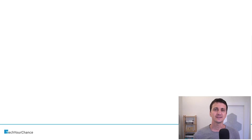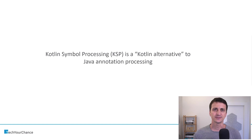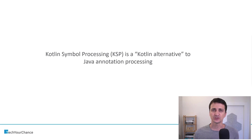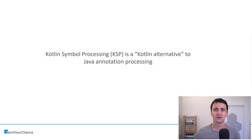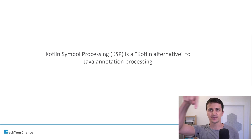In this video we're going to discuss Kotlin symbol processing. KSP, or Kotlin Symbol Processing, is a Kotlin alternative to Java annotation processing. Since KSP is an alternative to Java annotation processing, you really need to know a little bit about Java annotation processing in order to understand the context of KSP. If you need a reminder about annotation processing, I already created a video on this subject and will post a link below.